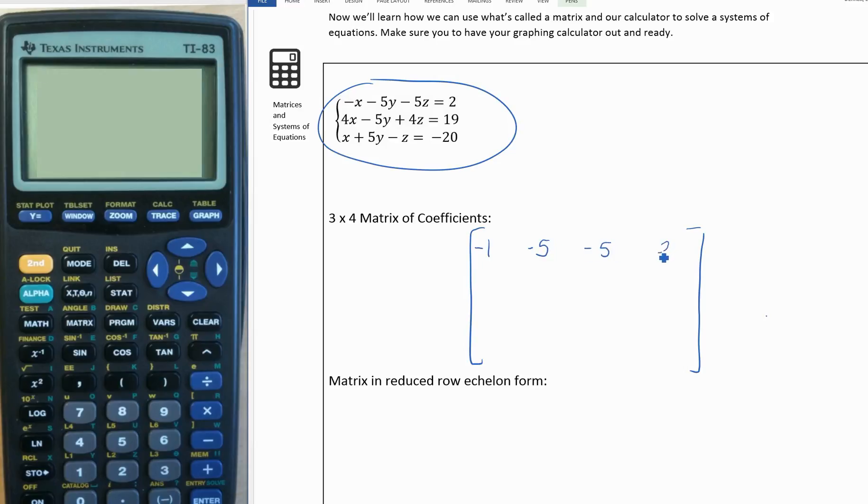negative 5, 2. We want to make sure we keep it the same each time. The first column is the x's, the second column is the y's, the third is the z's, and the last one is what's on the other side of the equal sign. These are called our columns.